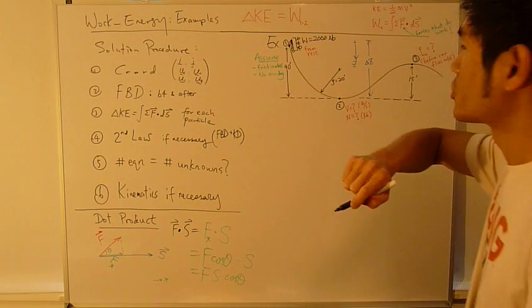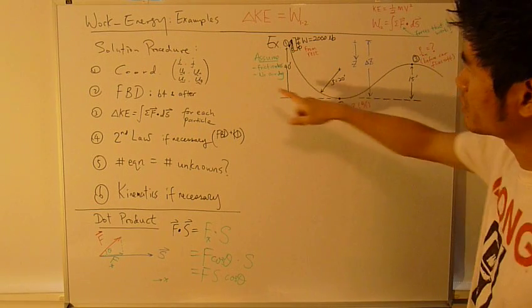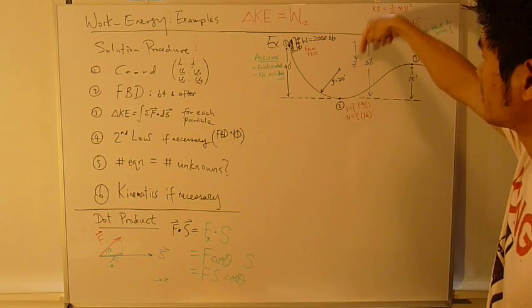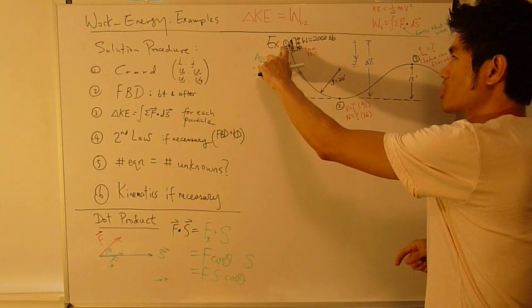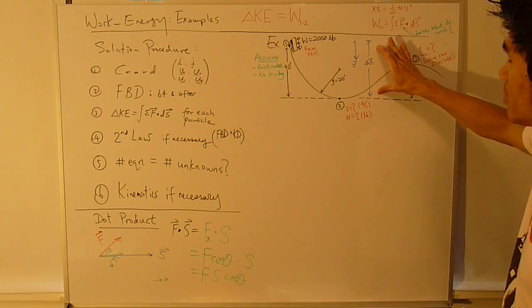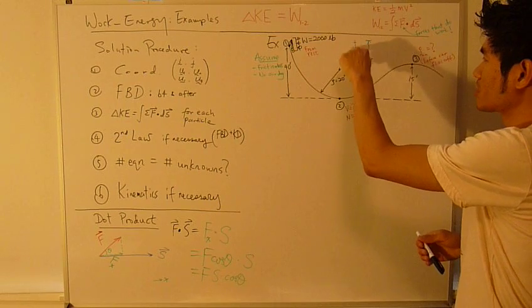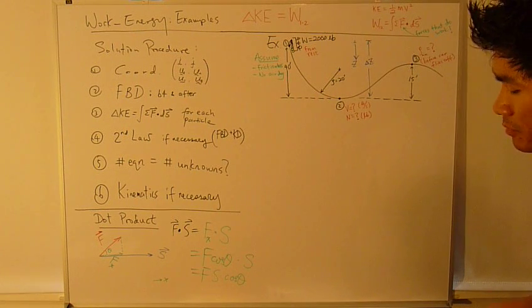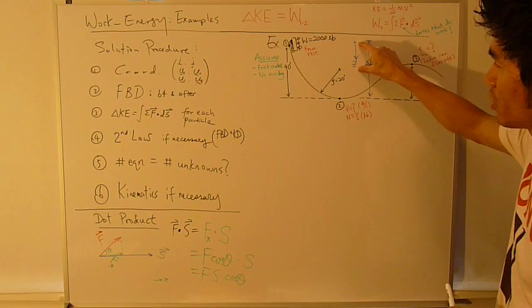Step 1. Choose a coordinate system. In this problem, I'm going to use the rectangular coordinate system, the Cartesian, and I'm going to define the z as pointing down. I'm going to concern with position 1 and 2, and only the vertical distance matters here. I'm going to choose the z direction pointing down, and you see more clearly why I choose this rectangular coordinate system.